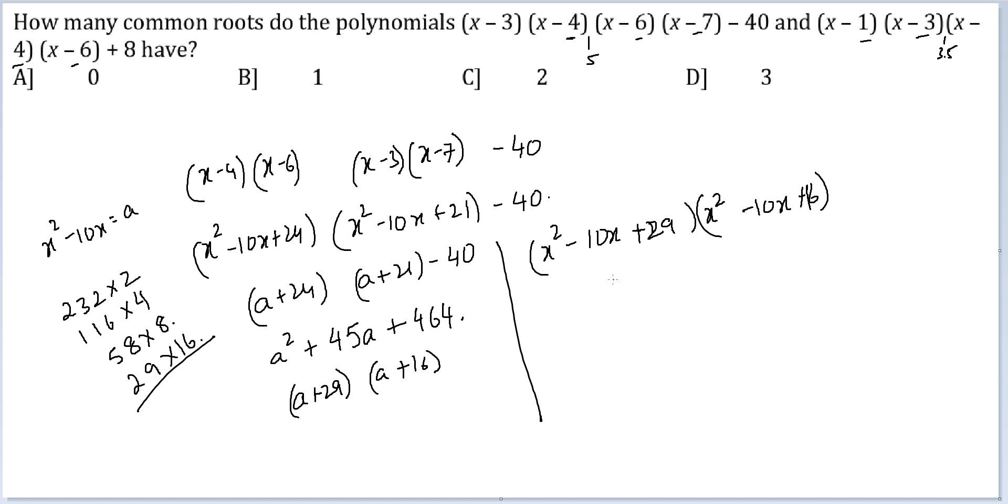So the roots of this expression are going to be something weird. 10 plus minus under root 100 minus 4 into 29. 4 into 29 is 116. So under root of minus 16 whole thing divided by 2. The two roots here would be 8 and 2. So for the first expression the two roots identified are 8 and 2. And 10 plus minus under root minus 16 whole thing divided by 2.